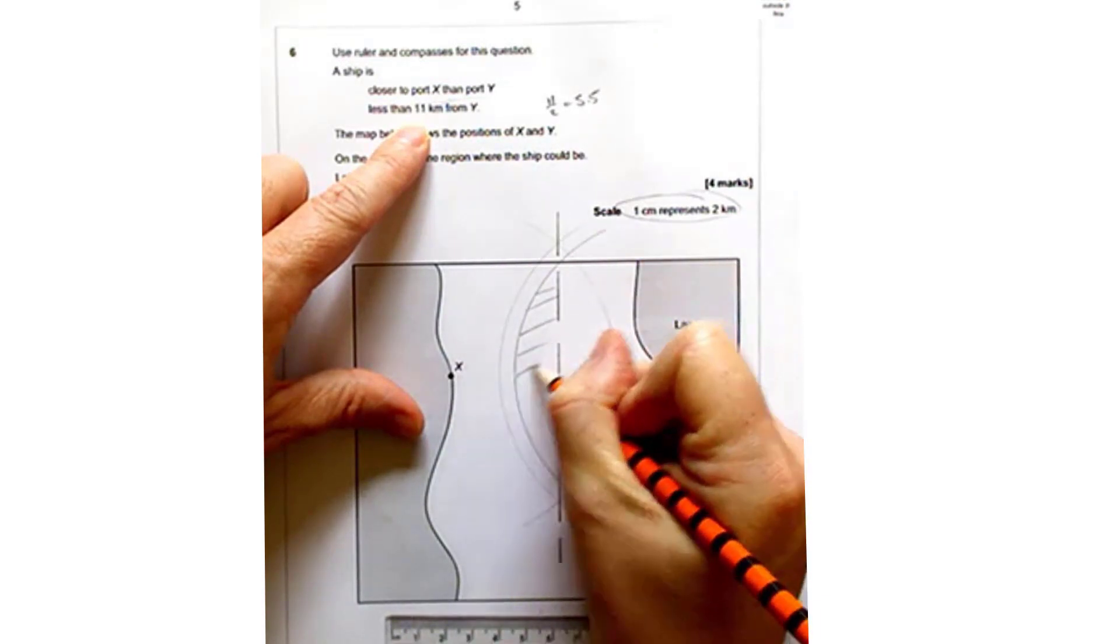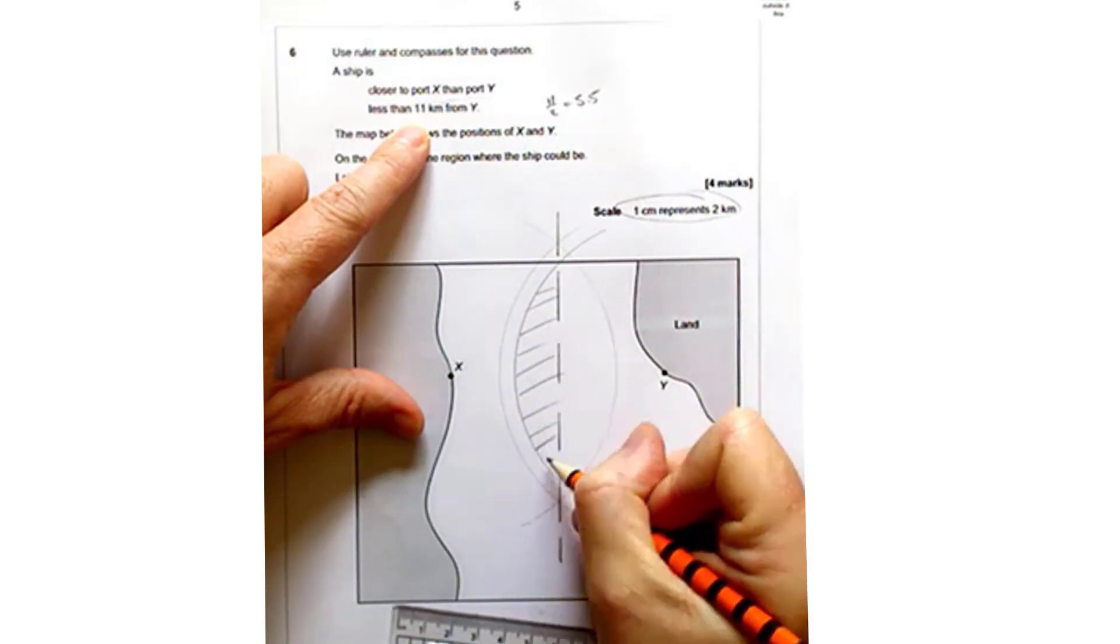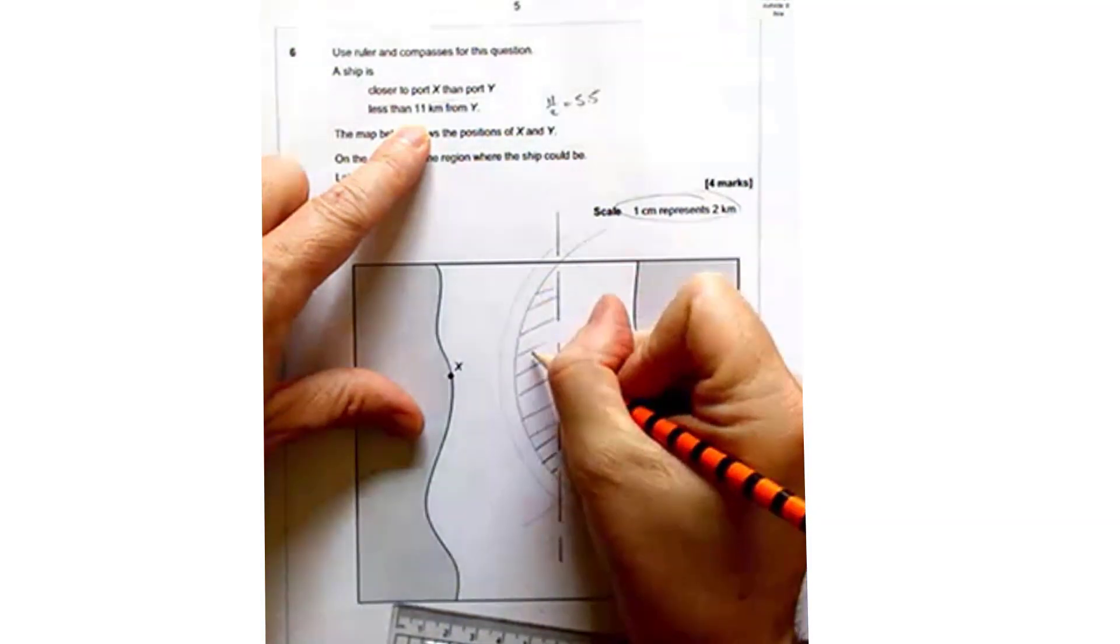Don't forget to label it R. It says that specifically in a question and if you don't remember to do that part you will lose a mark. Okay, all done.